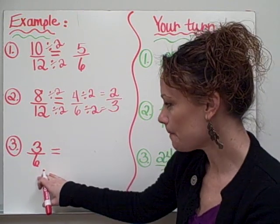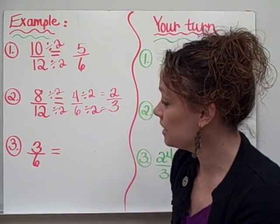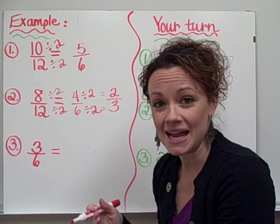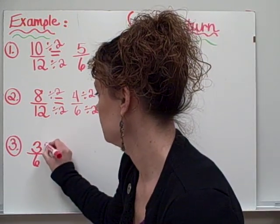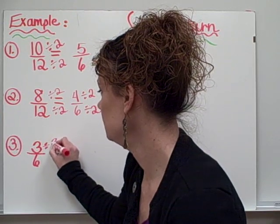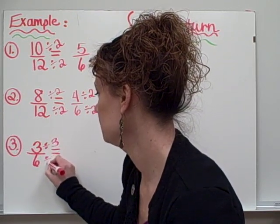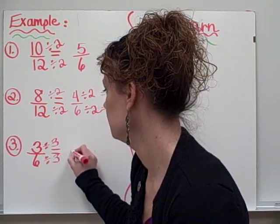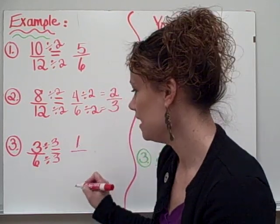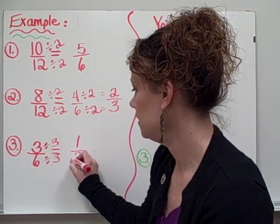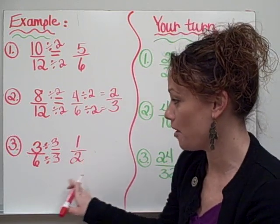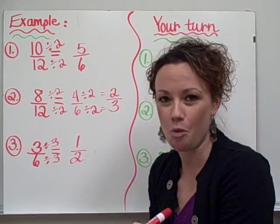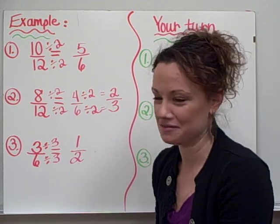Let's try one more. 3 sixths. I need to think of a number that goes into 3 and 6. 3 can be divided by 3. And 6 can be divided by 3. 3 divided by 3 equals 1. And 6 divided by 3 equals 2. So my lowest term, simplest form of 3 sixths is 1 half. And I cannot go any lower than that.